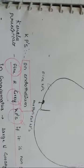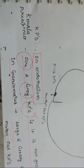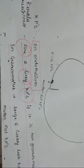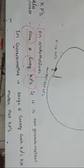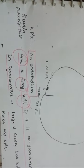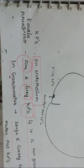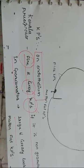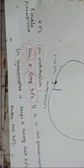Next we have keratic precipitates, or KPs. These are keratic precipitates on the endothelium. If they are non-granulomatous, they appear as fine and gray keratic precipitates. In granulomatous uveitis, there are large and greasy-looking keratic precipitates called mutton fat keratic precipitates. Keratic precipitates are present on the endothelium and can be of two types: fine gray ones in non-granulomatous disease.